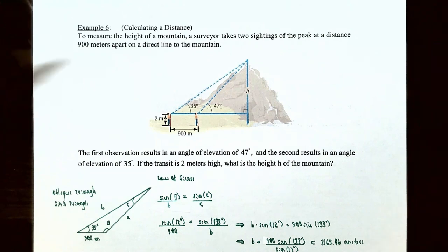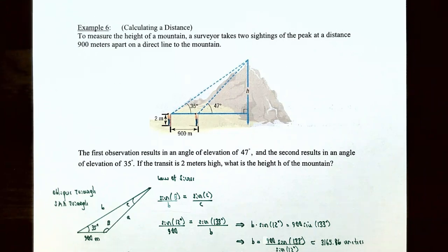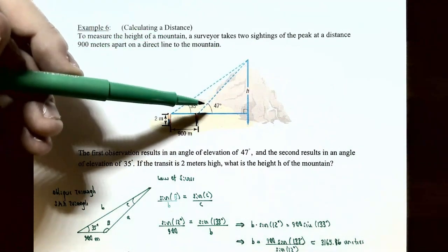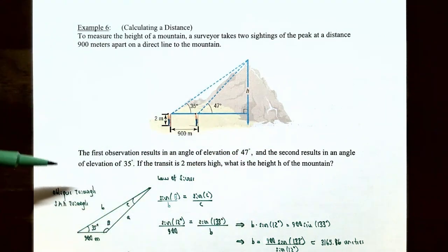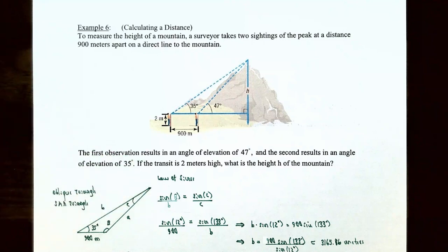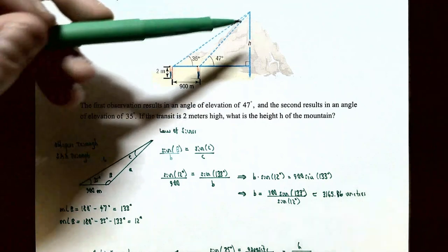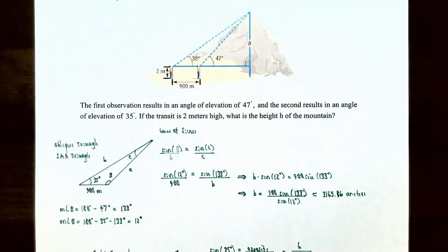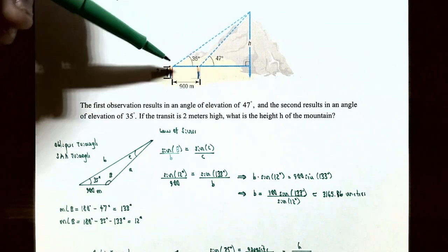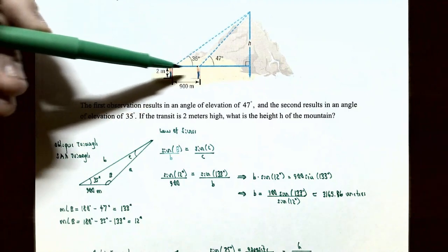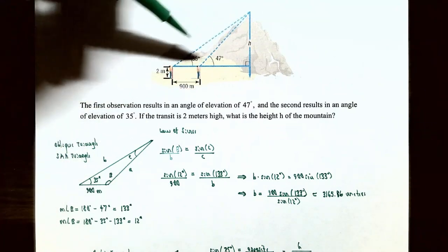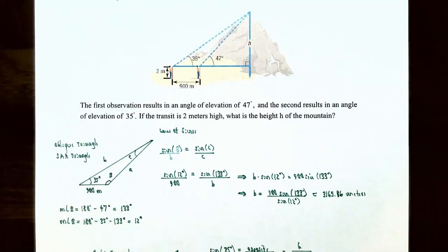Example six: calculating a distance using the law of sines. To measure the height of a mountain, a surveyor takes two sightings of a peak 900 meters apart on a direct line to the mountain. The first observation gives an angle of elevation of 47 degrees, and the second gives 35 degrees. If the transit is two meters high, what is the height h of the mountain? There are two triangles in this figure — a right triangle for the 47° sighting and an oblique triangle for the 35° sighting.